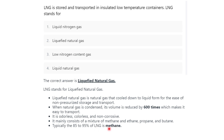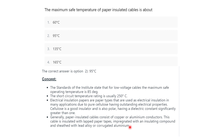The next question: the maximum safe temperature of paper insulated cables is about — 60°C, 95°C, 135°C, or 165°C. The correct option is 95 degrees Celsius.